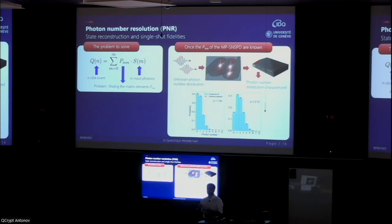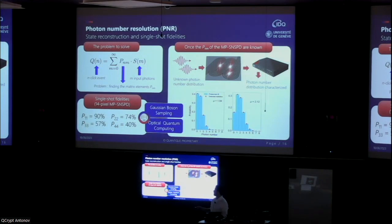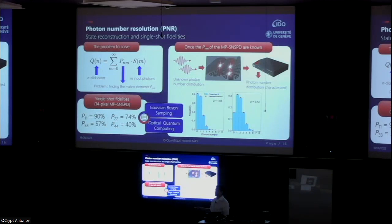Once the detector is characterized and the matrix elements are verified, there is no limitation on the light that can be sent and we can study any light distribution. An even harder problem is single-shot photon number determination: knowing in a single time window exactly how many photons impinged on the detector. For this we refer to single-shot fidelities — the diagonal elements of the matrix. The one-photon fidelity p11 is the single photon efficiency shown earlier, and we can also define two-photon fidelity, three-photon fidelity, and so on. These numbers are extremely important for Gaussian boson sampling and optical quantum computing.